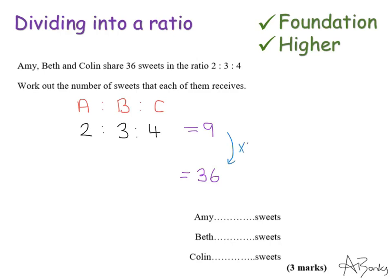So if I multiply all of the numbers in my ratio by 4, I get 8, 12, and 16. And let's just double check. Do these 3 numbers add up to 36? Yes, they do. So this is my ratio. So this is the amount that each of the people gets.